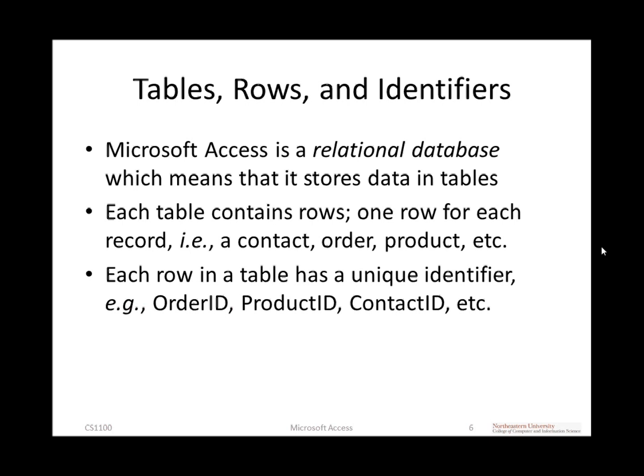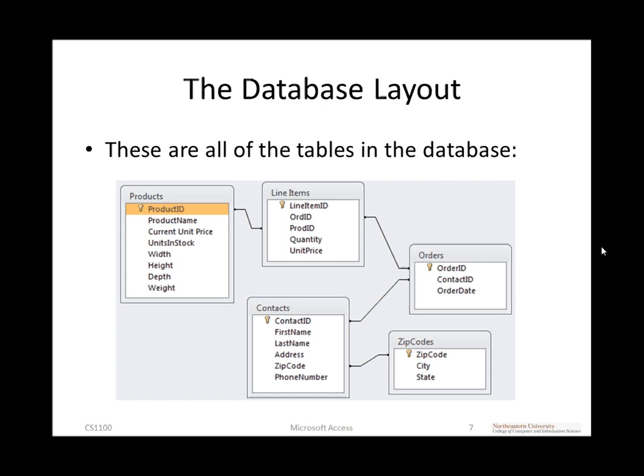Each row in a table contains a record — a particular customer, a particular order, a particular product — and each one is identified through some unique identifier. The database overall has five tables: products, orders, contacts, line items, and zip codes. One thing you may notice with relational databases is that information is often split into many different tables rather than one big table like in Excel. This is because we go through a process called normalization to store data without duplicates and in a very efficient manner.